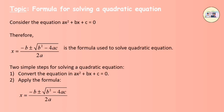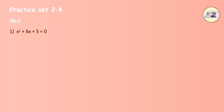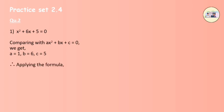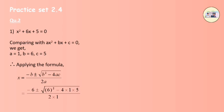Practice at 2.4, question number 2. First question: x² + 6x + 5 = 0. Comparing with ax² + bx + c = 0, we get a = 1, b = 6, and c = 5. Therefore, applying the formula: x = (-b ± √(b² - 4ac)) / 2a, which gives x = (-6 ± √(6² - 4·1·5)) / (2·1).